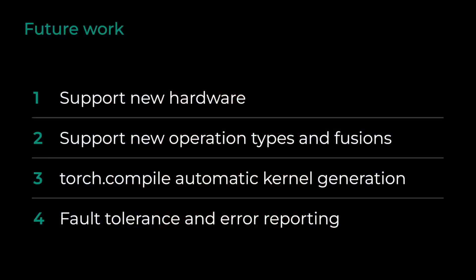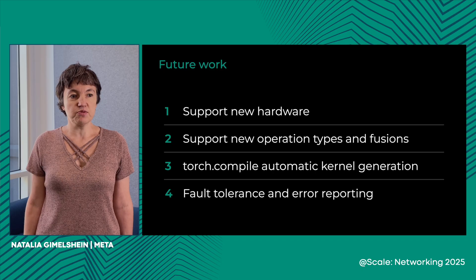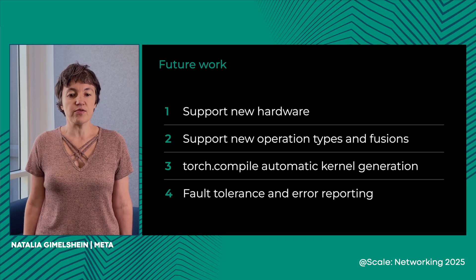We've talked about using symmetric memory on single-node systems, but are we done? Not by a long margin — we have a lot of future plans. First, we want to support new hardware types. We are working on adding support for NVL72 systems that link 72 GPUs with NVLink. We are also working on adding support for AMD systems and new hardware as it comes out. As time goes by, new operations will inevitably become popular, and we want to write those operations and put them into PyTorch Core so they're available for everyone.